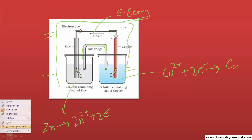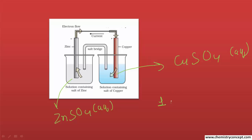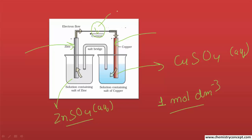The composition of the Daniel cell is: at the anode, we have a ZnSO₄ solution with a zinc electrode, and at the cathode, we have a CuSO₄ solution with a copper electrode, both at a concentration of 1 mol/dm³. When connected to a voltmeter at this concentration, we get a potential of 1.1 volts. This is a typical Daniel cell, which is a type of galvanic cell.